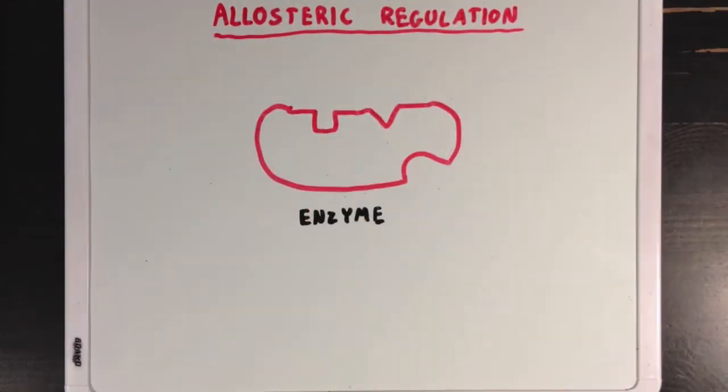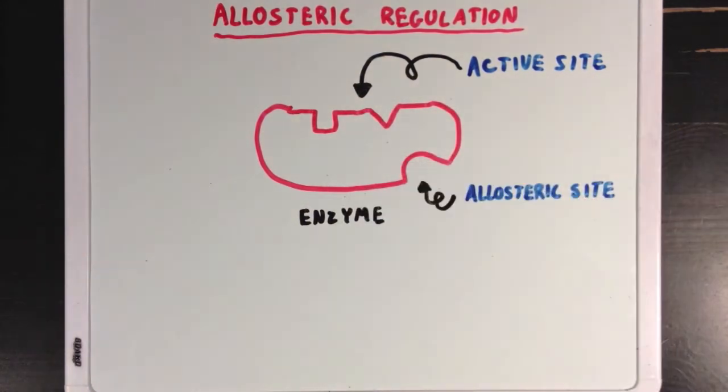We know that enzymes usually have an active site where substrates can bind, but enzymes can also have what we call an allosteric site. These allosteric sites are places on the enzyme where any enzyme regulator can bind. I've put this star here just to point out that allosteric sites can be anywhere on an enzyme, and there can be any number of them as well.